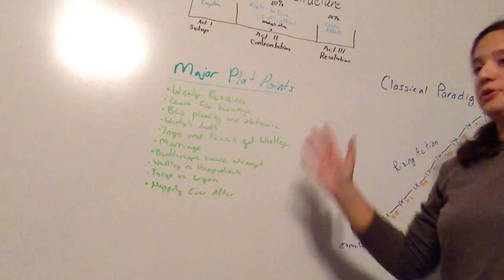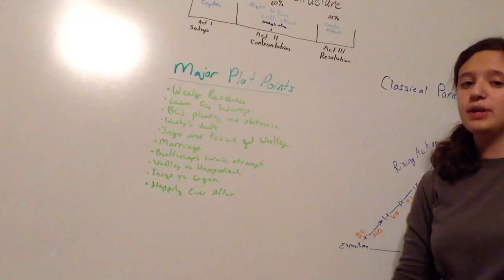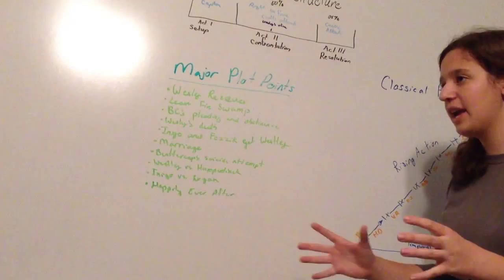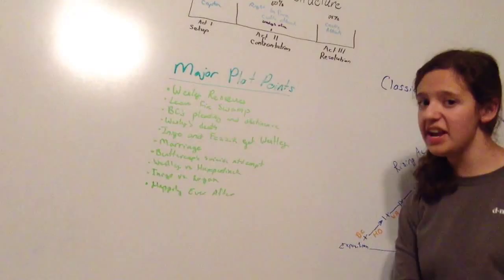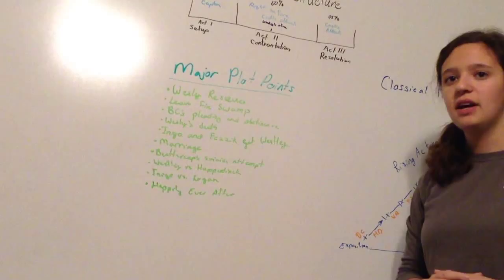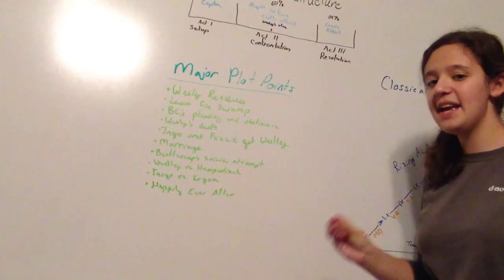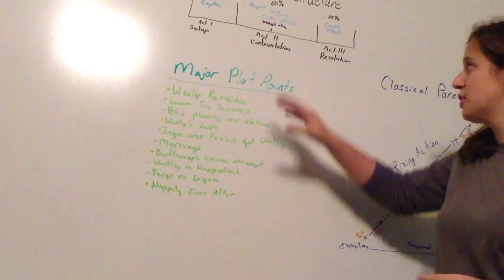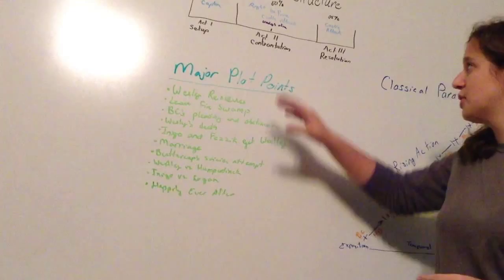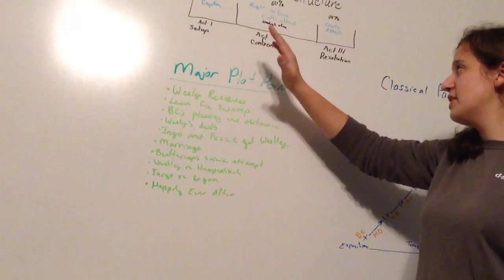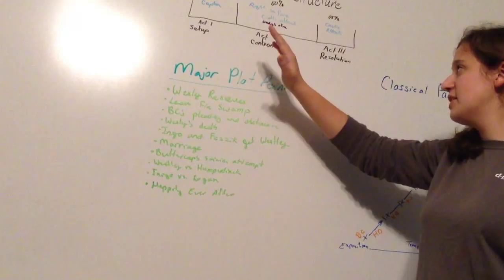Then we go on to the confrontation, which covers from when she's kidnapped all the way to when Miracle Max brings Wesley back to life, right before the attack on the castle and the marriage of Buttercup and Humperdinck. That's your main confrontation, where most of the problems happen — Buttercup being stopped from finding true love by Humperdinck, and both she and Wesley being stopped by Humperdinck and Rugen from being together. The midpoint is when they leave the fire swamp, Humperdinck surrounds them, and Wesley is ultimately taken to Rugen. You think they're going to be together, and then it changes when Wesley is taken and ultimately killed.